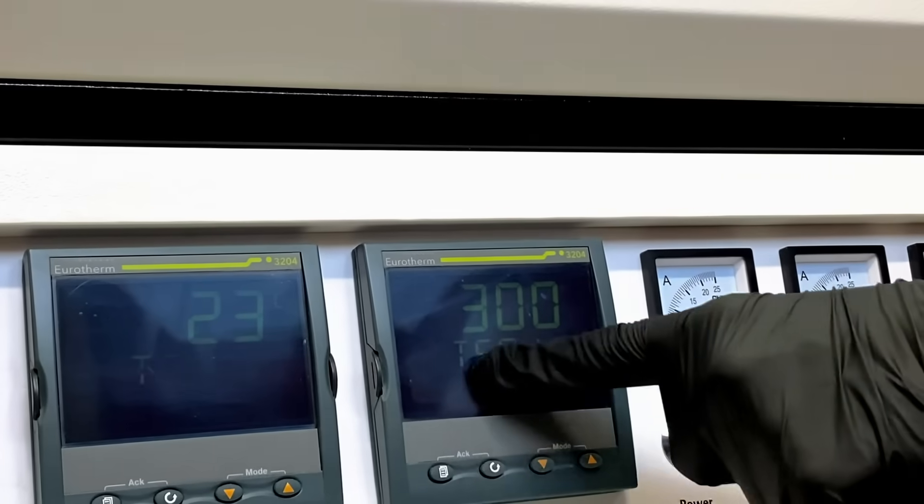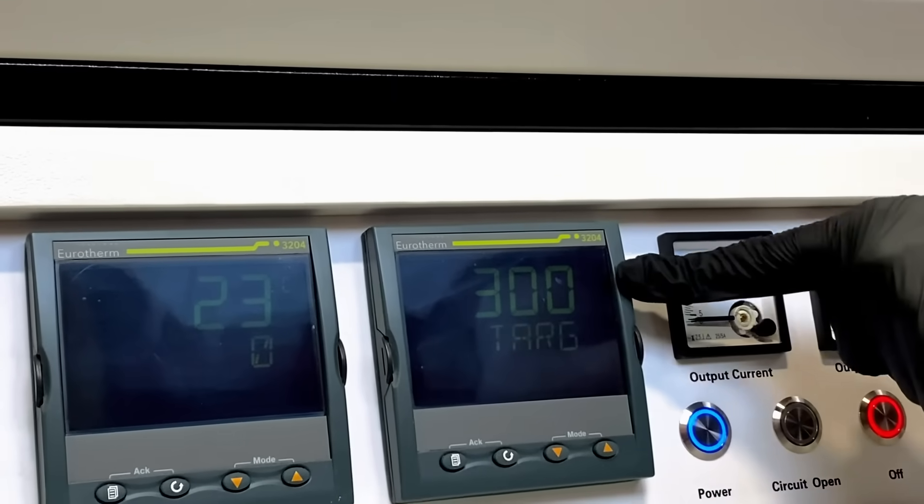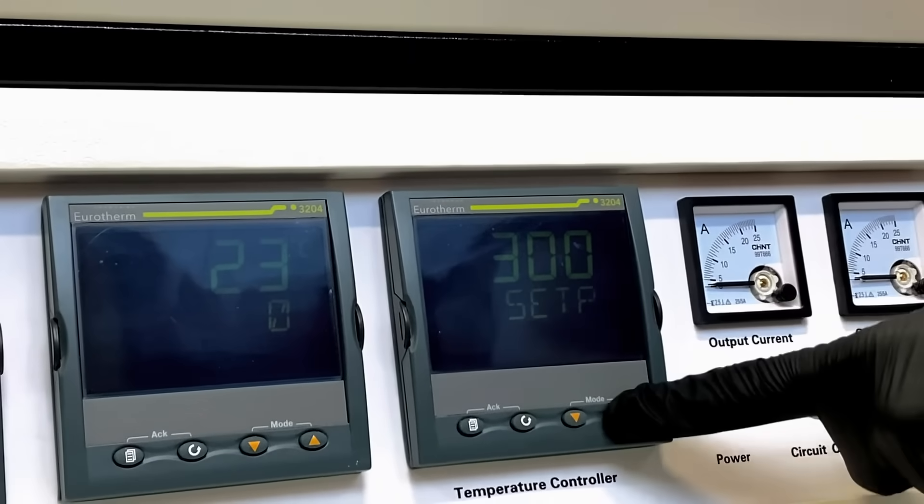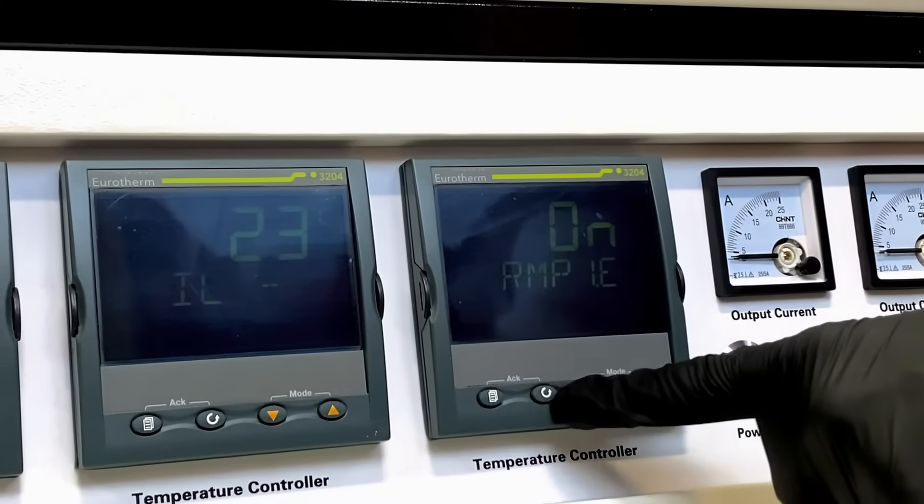This is our first selected temperature set point for the Eurotherm controller program. It is currently set to 300 Celsius. Press the cycle button to accept.